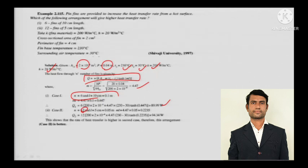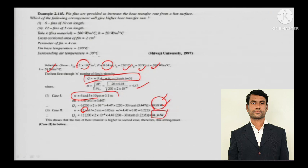The heat transfer rate with 6 fins of 10 cm length is 90 watts. When increasing to 12 fins of reduced length (5 cm), the heat transfer rate increases. So the second arrangement — 12 fins of 5 cm — is better.